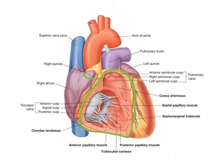The outflowing part is smooth and forms an upper conical shape, giving rise to the pulmonary trunk. Embryologically, this outflowing part develops from the bulbus cordis, which we will cover in embryology.